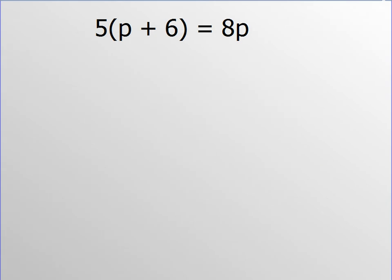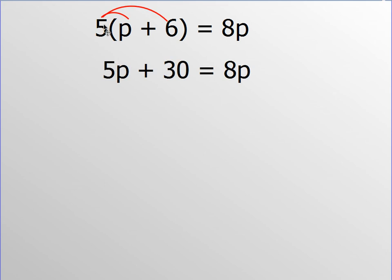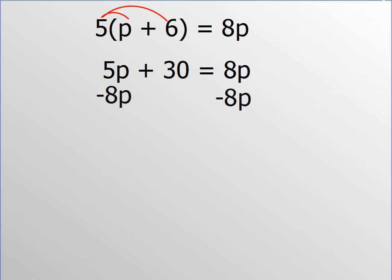Next equation. Is there any distribution to be done? Since we have parentheses, yes. We take the 5 outside the parentheses and multiply it to every term inside: 5 times p and 5 times 6 gives us 5p + 30 = 8p. There are no like terms on either side, so we skip step two. Step three: get all variables to one side — I subtract 8p from both sides so the variable on the right is eliminated.